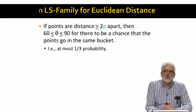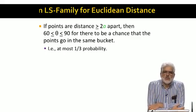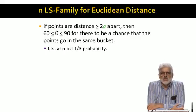So if two points have Euclidean distance at least 2a, then there is zero chance they fall into the same bucket unless theta is in the range of 60 to 90 degrees. Since theta is random in the range 0 to 90, there is at most 1 third probability of sharing a bucket, and thus at most 1 third chance that a randomly chosen hash function from the LSH family will say yes.